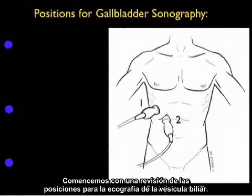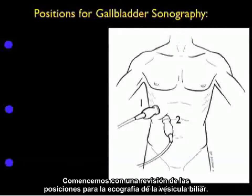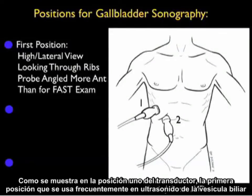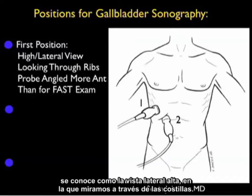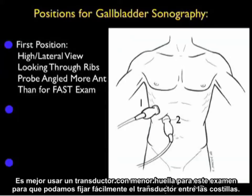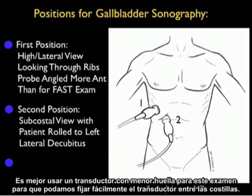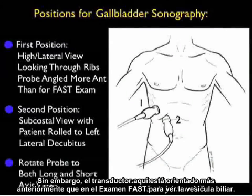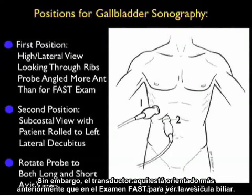Let's review the positions for gallbladder sonography. The first position is known as the high lateral view, in which we're looking through the ribs. It's best to use a smaller footprint probe so we can easily sit it between the ribs. We come in at a view similar to the right upper quadrant view for the trauma FAST exam, however the probe is angled more anteriorly to image the gallbladder.